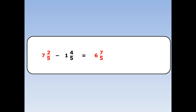7 and 2 fifths is exactly the same as 6 and 7 fifths. I borrow a whole from the 7 and turn it into 5 fifths. 5 fifths and 2 fifths is 7 fifths. Then I write down minus 1 and 4 fifths, which stays exactly the same.